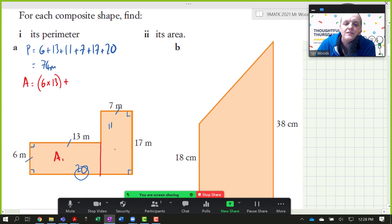And we're going to add that to the area of this one over here, which is going to be the 17 times by the 7. So that'll be 6 thirteens are 78, and 17 sevens are 119, so the total will be 197 square metres.